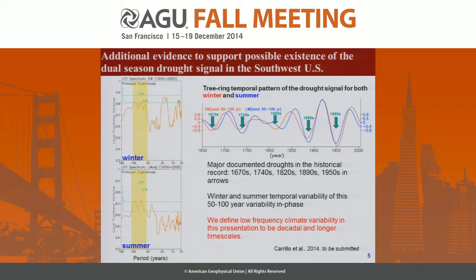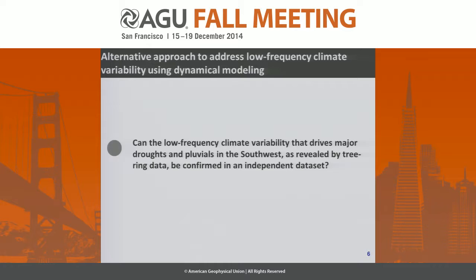Therefore, in this study, we want to answer one question: is it possible that the drought variability in the southwest identified by the tree-ring chronology can be determined or confirmed by an independent dataset? In this case, we take an alternative approach, which is going to use a dynamical downscaling modeling framework. The short answer to this question is yes. However, in the rest of the talk, I'm going to provide the evidence.